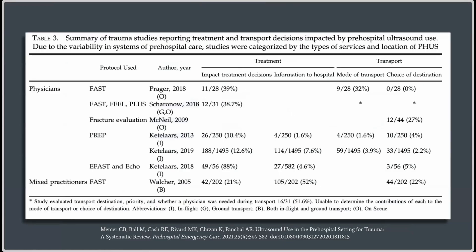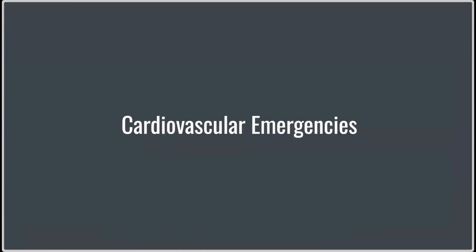This also looks at the impact it had - how did it impact treatment? The percentages here show how it affected their choice of transport and destination, and whether they used that information and relayed it to the hospital. We'll come back to this graph because it also explains another point further down.